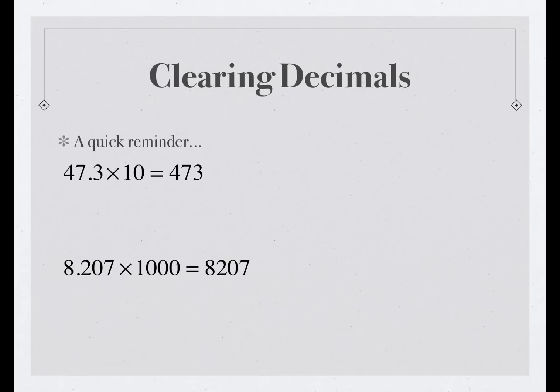8.207 times 1,000 effectively moves the decimal point three places to the right, so that we get 8,207. When we have decimals that are less than 1, greater than 0, such as 0.02, or 2 hundredths, we can multiply 2 hundredths by 100 to get 2.